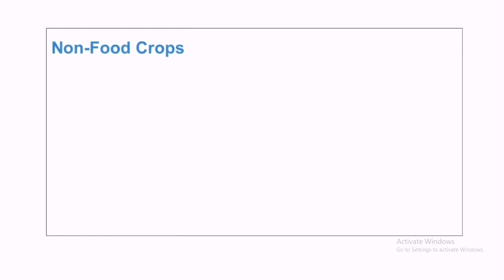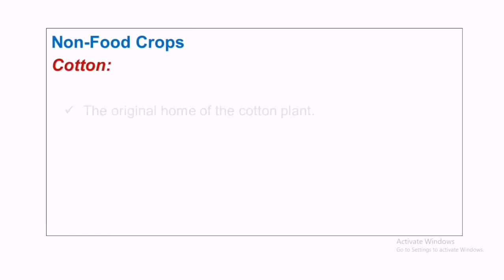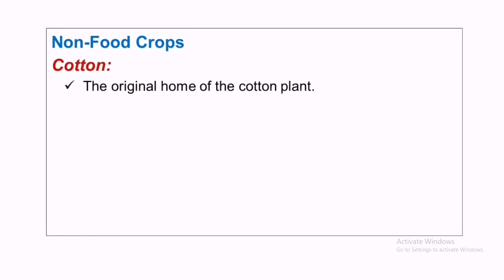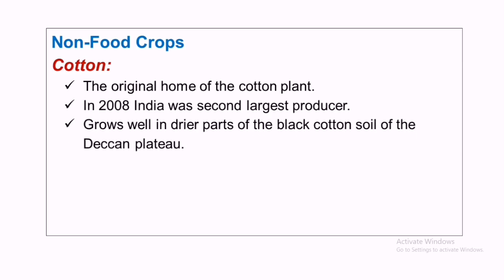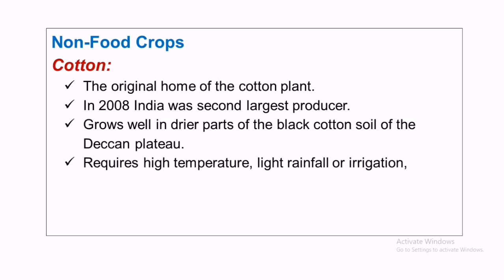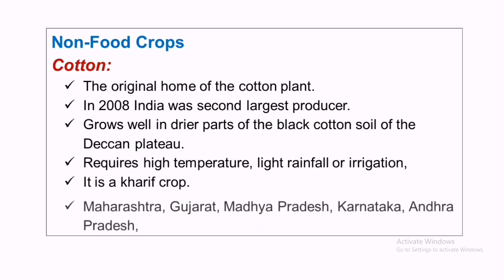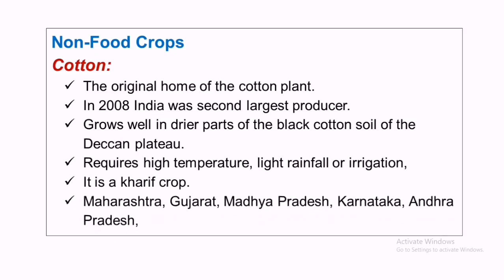The second example of a non-food crop is cotton. India is the original home of the cotton plant. In 2008, India was the second largest producer. Cotton grows well in the drier parts of the black cotton soil of the Deccan plateau, requiring high temperatures, light rainfall, or irrigation. It is a Kharif crop. Maharashtra, Gujarat, Madhya Pradesh, and Karnataka are major cotton-growing states.